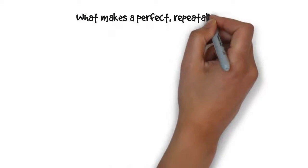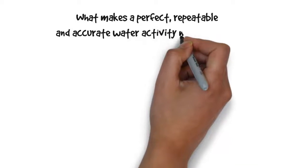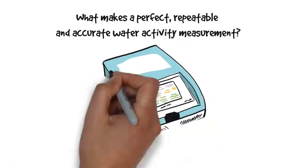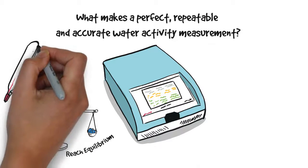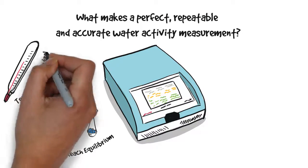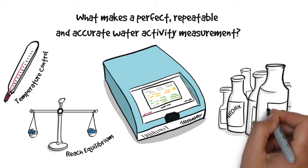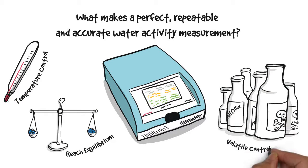What makes a repeatable and accurate water activity measurement? In measuring water activity, wait until the sample has reached stability. Measure at a consistent temperature so that you can compare values. Neutralize the influence of volatiles which can skew your results.